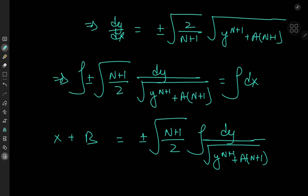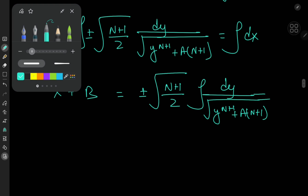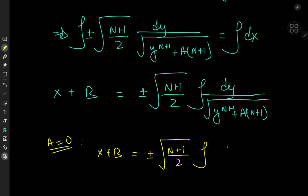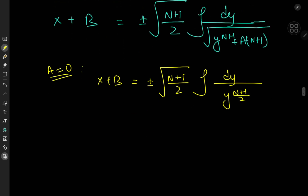However, we can look for simpler solutions for a specific value of the parameter a. The simplest case is a equal to 0, so we dive further into that. We would then have x plus b equal to plus or minus root of n plus 1 over 2 times the integral of dy divided by y to the n plus 1 over 2, which is a pretty simple integral to evaluate.